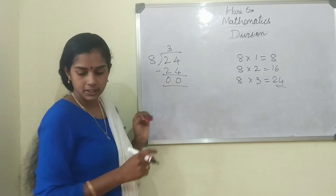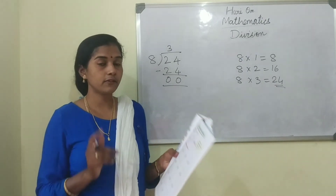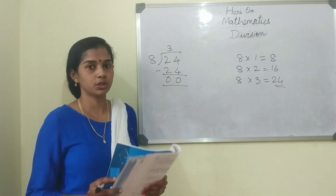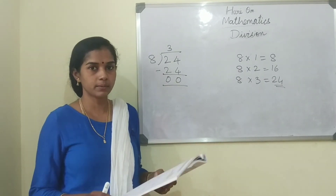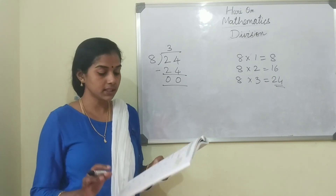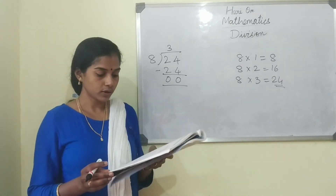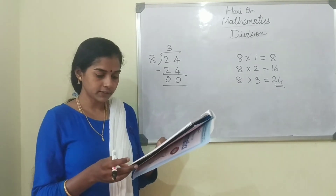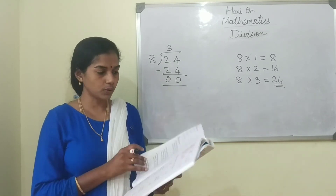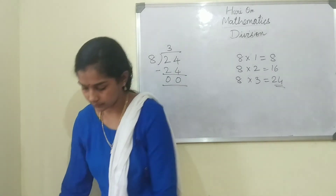Understood children? This is the long method. For division, everyone should be knowing the tables — I want everyone to learn the tables up to 10. The leftover problems we are going to solve tomorrow. Learn the tables, children.